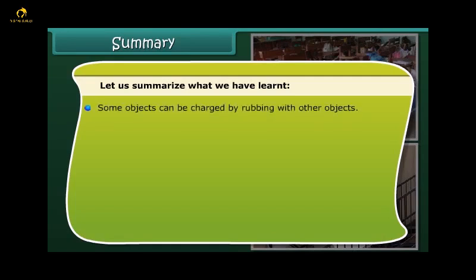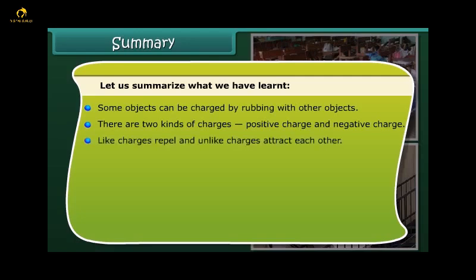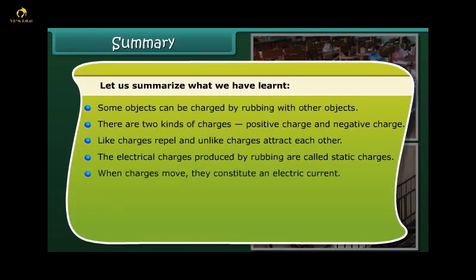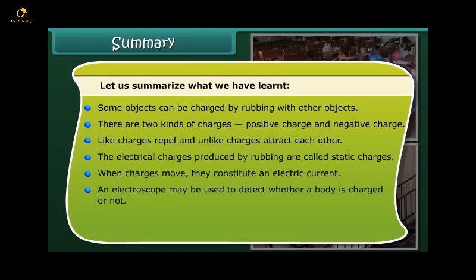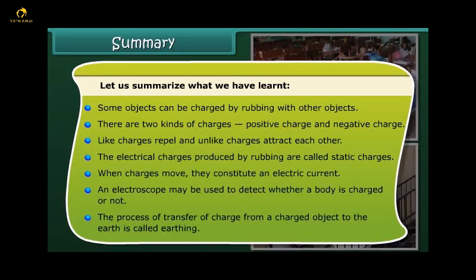Some objects can be charged by rubbing with other objects. There are two kinds of charges: positive charge and negative charge. Like charges repel and unlike charges attract each other. The electric charges produced by rubbing are called static charges. When charges move, they constitute an electric current. An electroscope may be used to detect whether a body is charged or not. The process of transfer of charge from a charged object to the earth is called earthing.